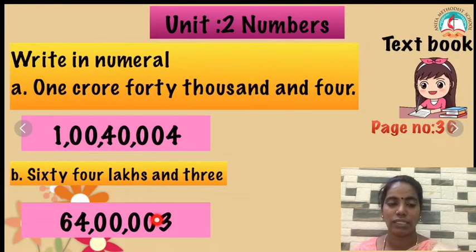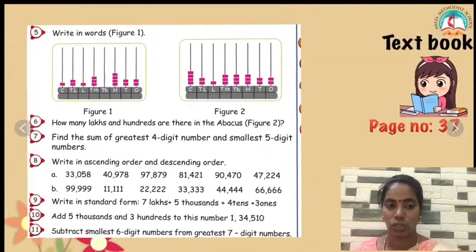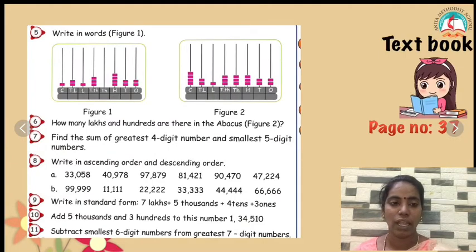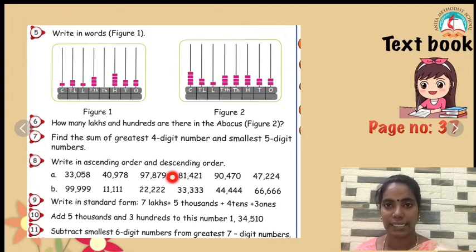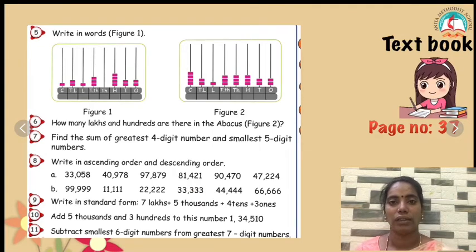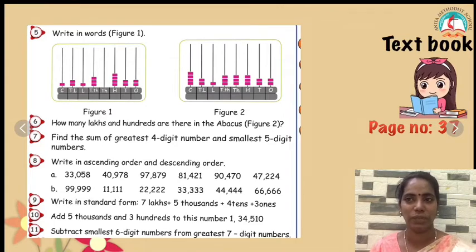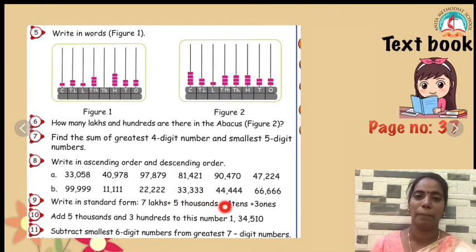Children, now this is what you are going to do as homework. Look at the sums — write abacus, draw abacus and then the beads, and then you have to finish this. You already know how to write ascending and descending order. You have to finish this in your classwork. Ascending means smallest to biggest; descending means biggest to smallest. Do this in your classwork.